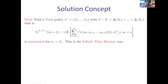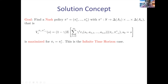A policy is called a Nash policy — let's call it π₁* up to πₙ* — if and only if: suppose you fix n−1 agents to follow this policy. The remaining single agent essentially faces a single-agent scenario. That remaining agent should play optimally, meaning he should optimize his value function. The utility of an agent is captured as the discounted sum of rewards, where gamma ensures the summation is bounded.